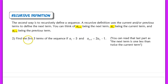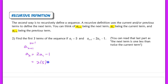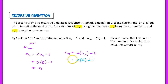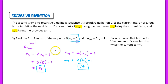For example, let's find the first three terms. If a sub 1 is 5, then a sub n plus 1 equals 2 times a sub n minus 1. When n equals 1, a sub 2 equals 2 times 5 minus 1, which is 9. Our third term, a sub 3, equals 2 times a sub 2 minus 1, so 2 times 9 minus 1, which is 17. Those are our first, second, and third terms.